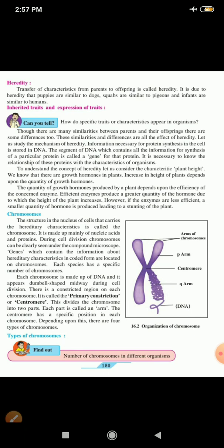It is called as the primary constriction or the centromere. You can see in the picture where it is constricted at the center. This divides the chromosome into two parts. Each part is called as the arm. The centromere has a specific position in each chromosome. Depending upon this, there are four types of chromosomes. So, you can see here in the picture 16.2, P arm, Q arm, the DNA, the arms of the chromosomes, its shape.